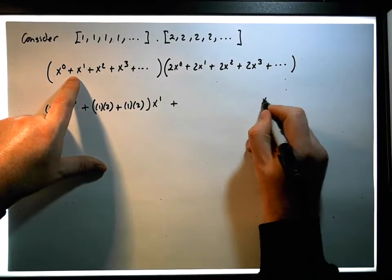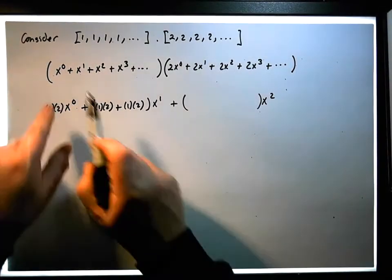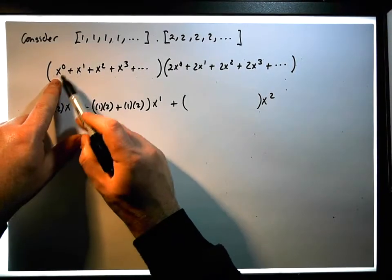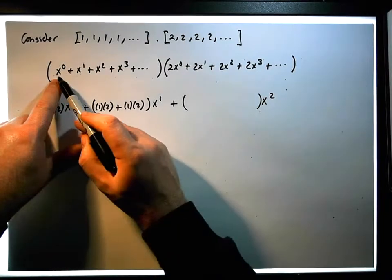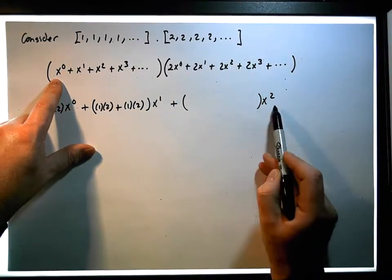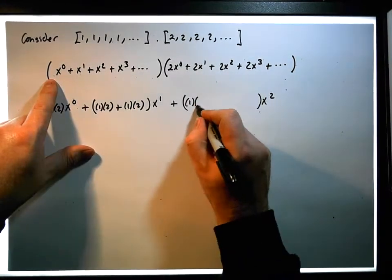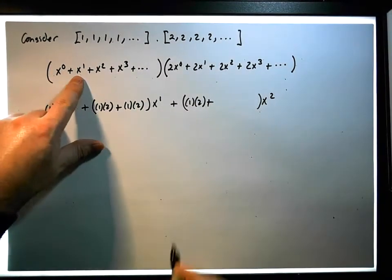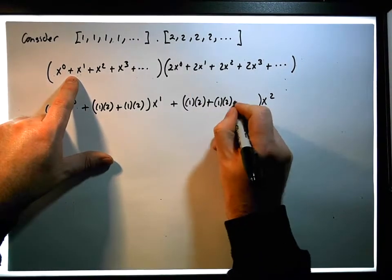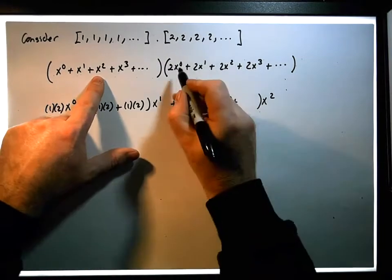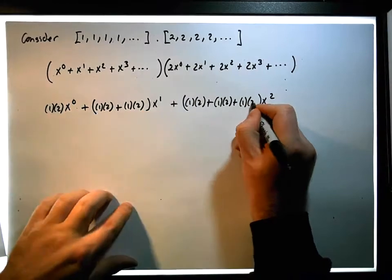When it comes to the x² term, there are going to be 3 combinations. We choose power terms that when multiplied give x². So x⁰ times x² gives x² — coefficients are 1 times 2. Plus x¹ times x¹ gives x² — coefficient is 1 times 2. Plus x² times x⁰ gives x² — its coefficient is 1 times 2.